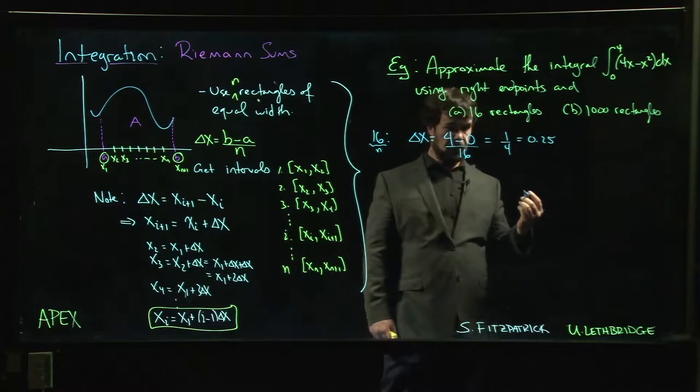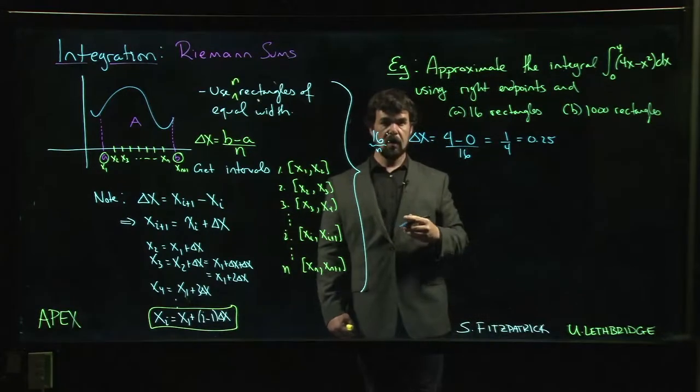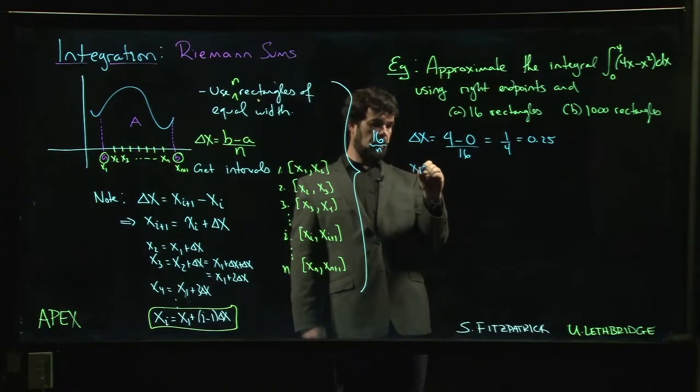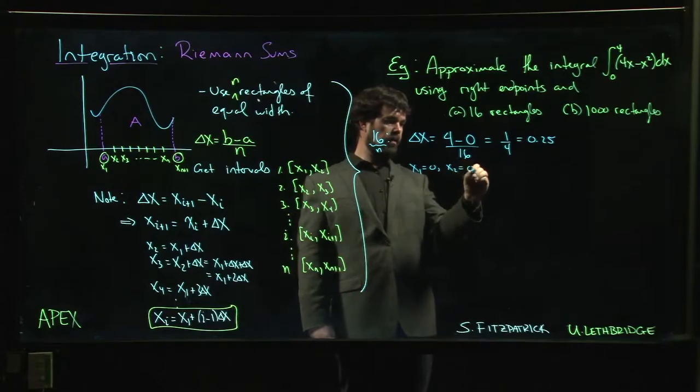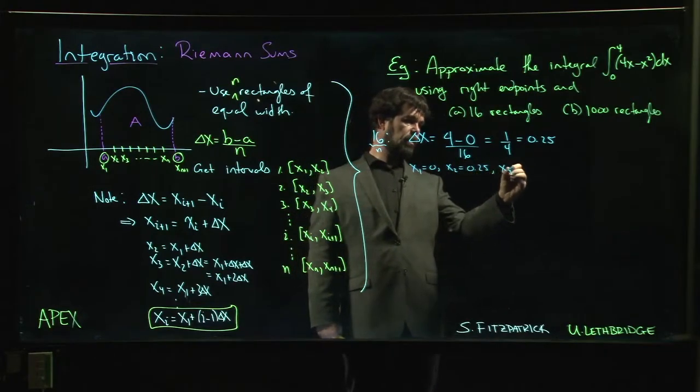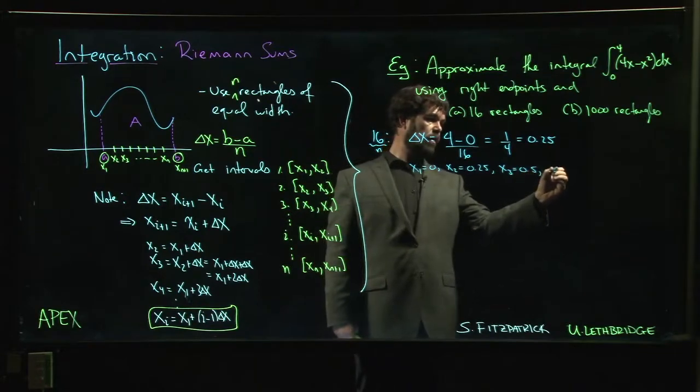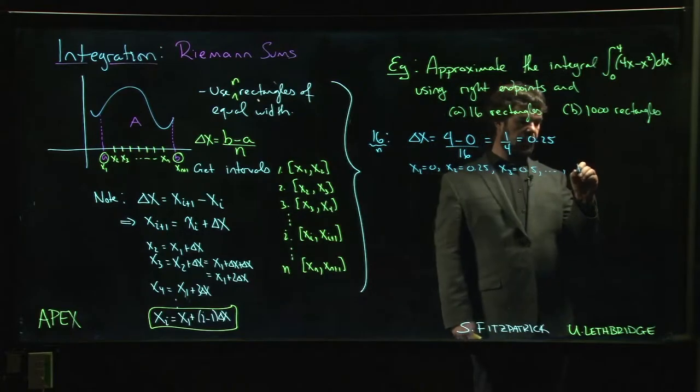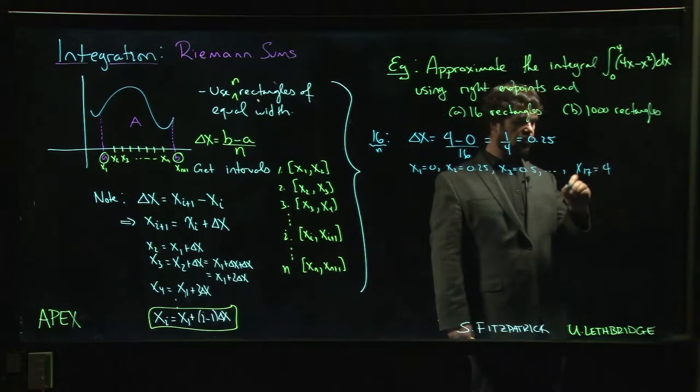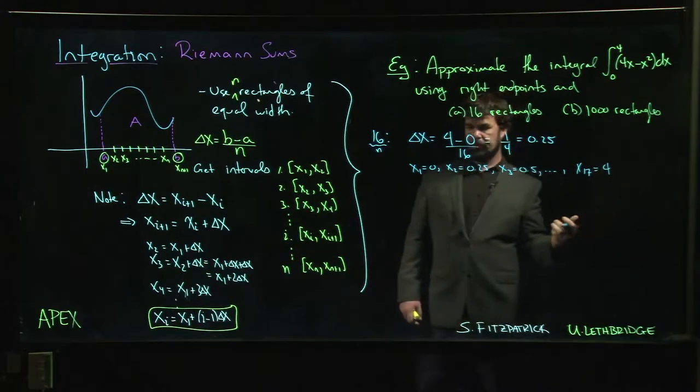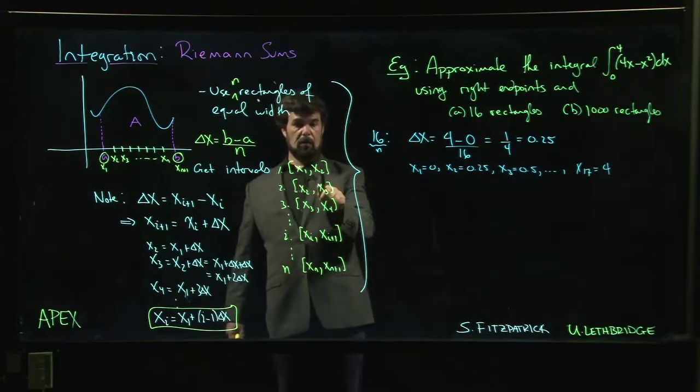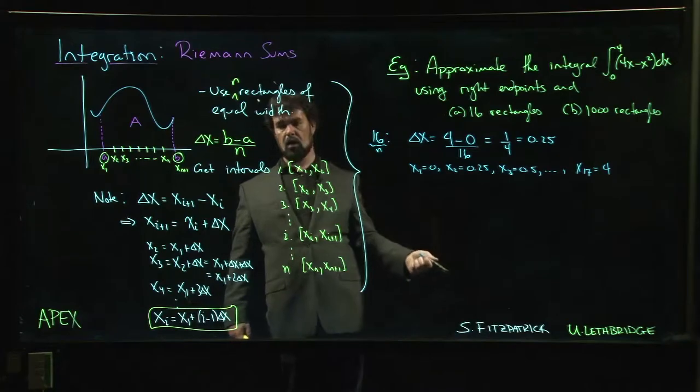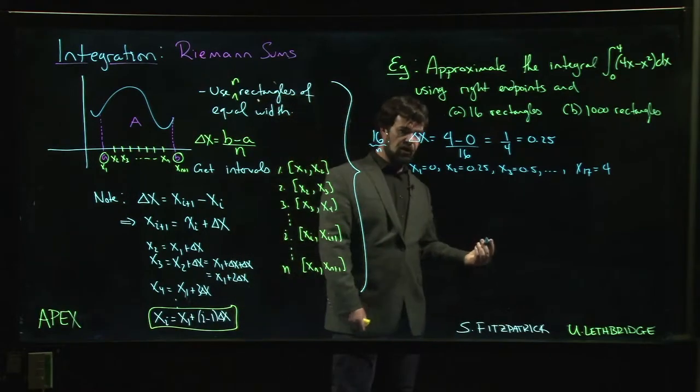That means we can now generate our points. We know that x1 is 0, x2 is 0.25, x3 is 0.5, and so on. We can generate all of those up to the last one, x17, which is 4. We have to do one more because our intervals are going to be from 0 to 0.25, from 0.25 to 0.5, from 0.5 to 0.75, and so on.